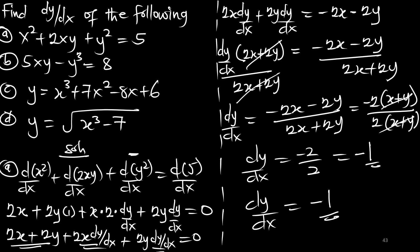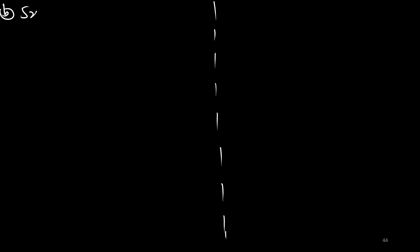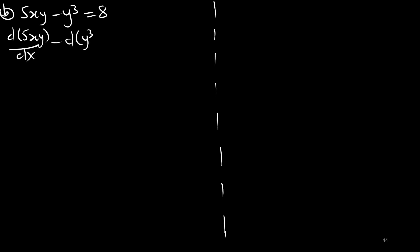Moving to part B: 5xy minus y cubed equals 8. We apply the derivative to the entire function. We can see that xy is also a product of x and y, so we use the product rule to solve for that.